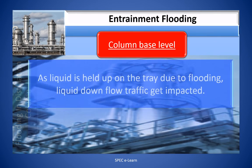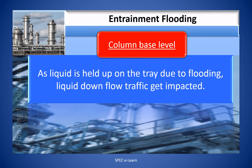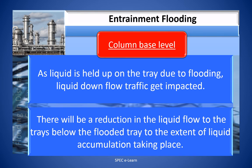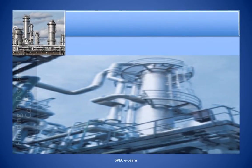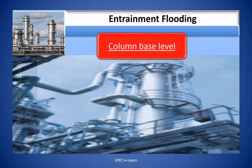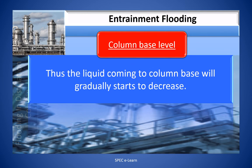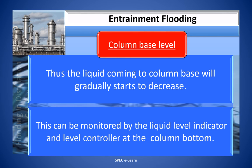As liquid is held up on the tray due to flooding, liquid downflow traffic gets impacted. There will be a reduction in liquid flow to the trays below the flooded tray, to the extent of liquid accumulation taking place. Thus, the liquid coming to the column base will gradually start to decrease, and this can be monitored by the liquid level indicator and level control at the column bottom.